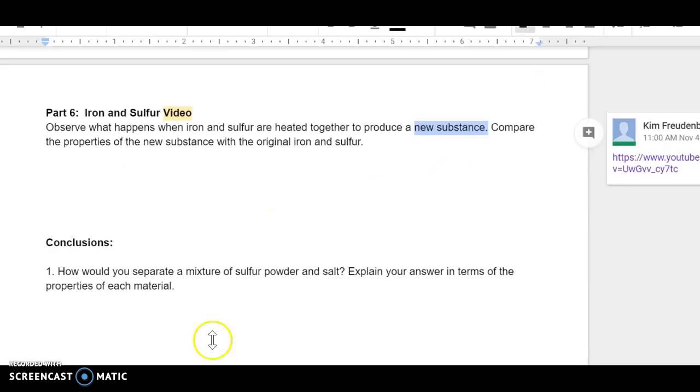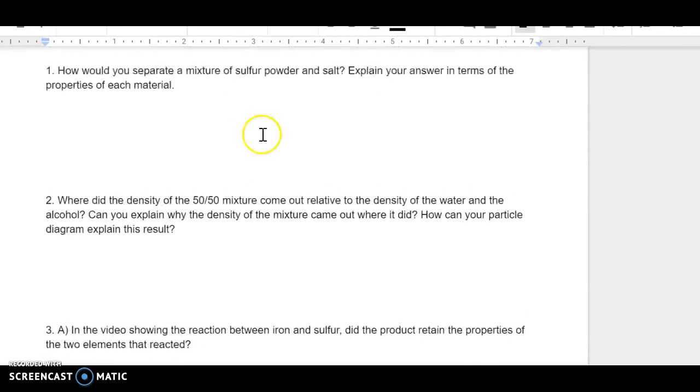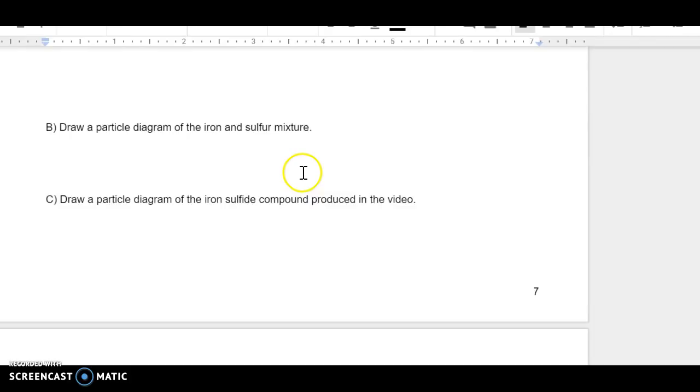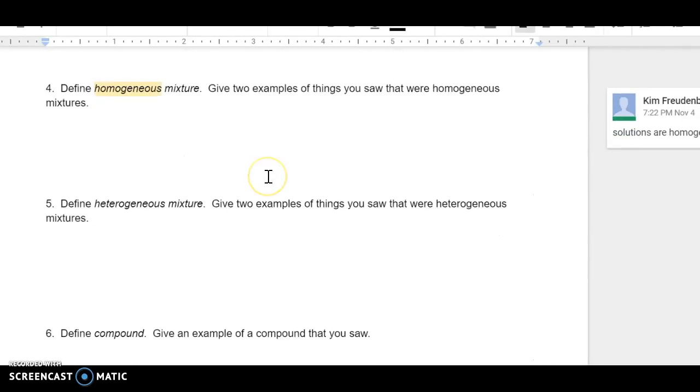All right, then you're going to answer all the rest of these questions. You can do all this. In number three, I want you to try to draw a particle diagram, which we kind of did together, of the iron and sulfur mixture. And then I want you to try to draw what you think happens when it produces a compound. And how does that look different, the mixture from the compound? So draw the particle diagrams. You can try that now if you want to pause it. And then let me copy this to a new screen.